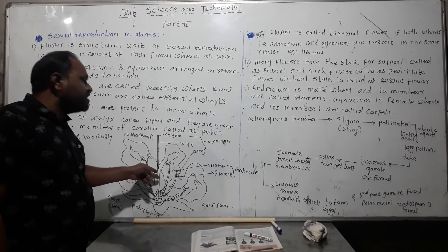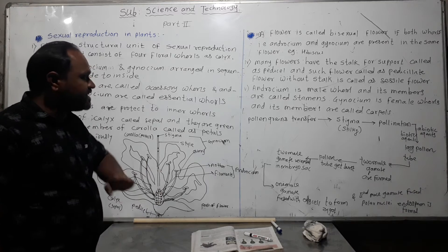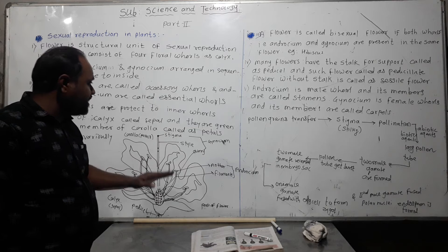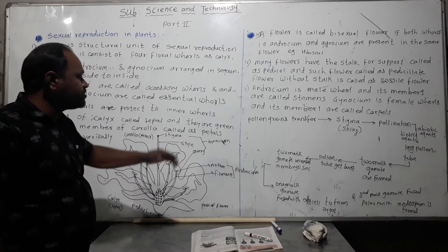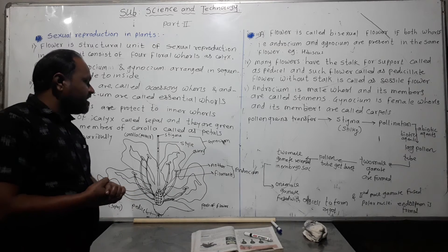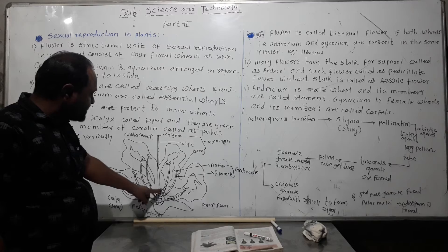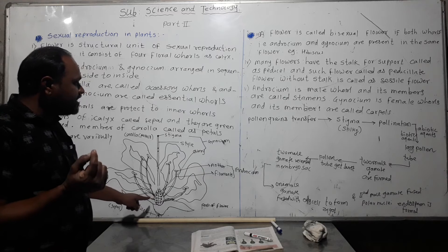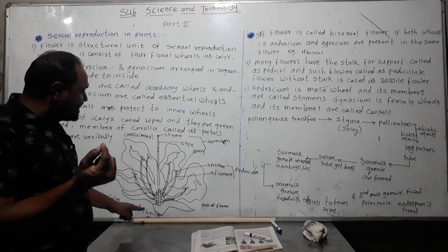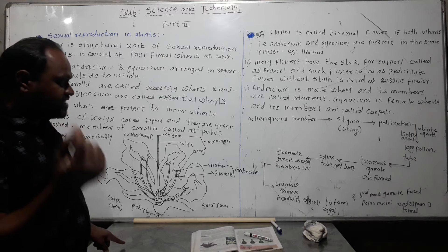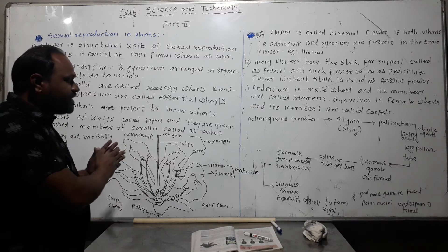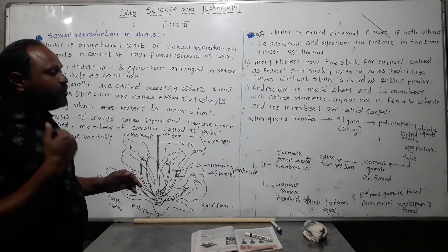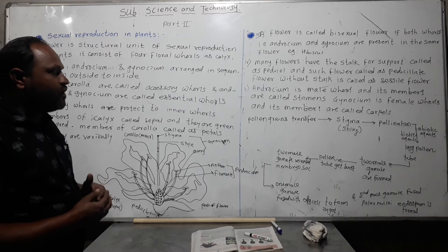The pollen tube grows through the style and transfers two male gametes into the ovary. The pollen tube then bursts, releasing the male gametes into the embryo sac, which is part of the ovary. One male gamete fuses with the egg cell to form a zygote.